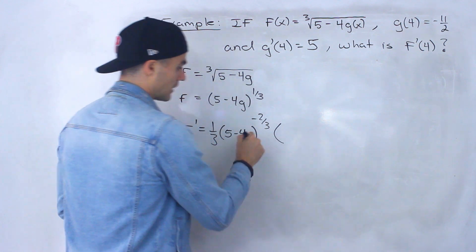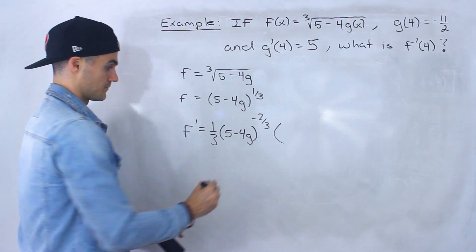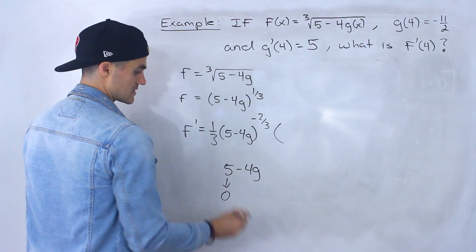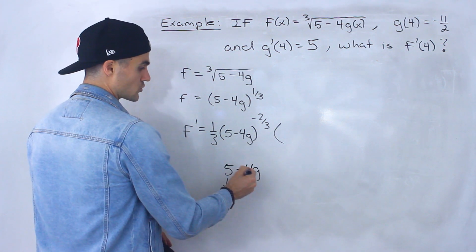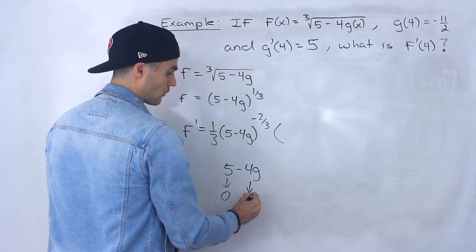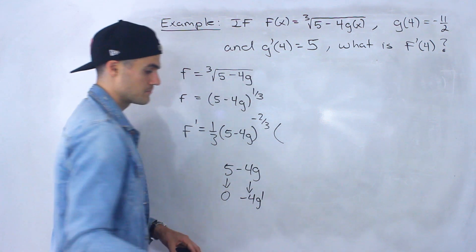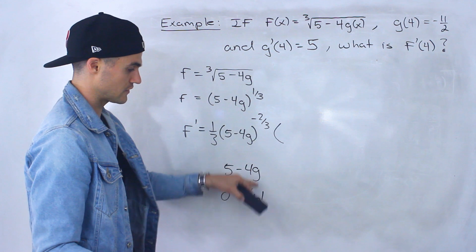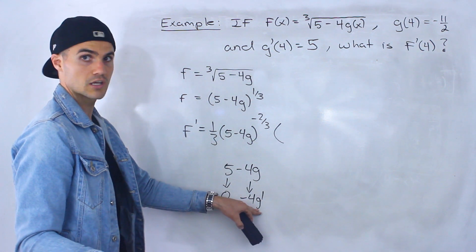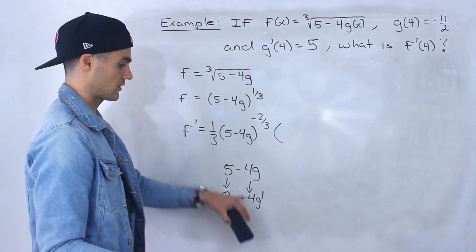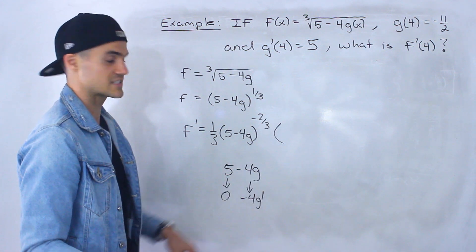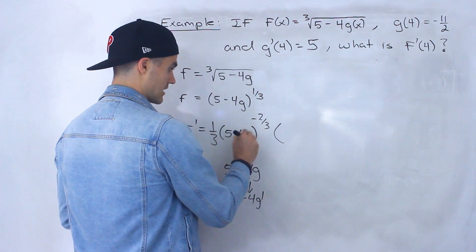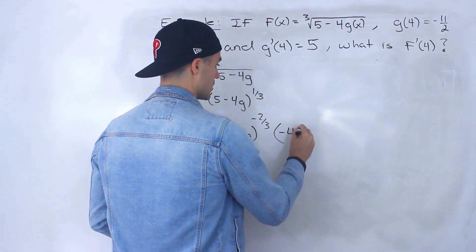Then we multiply by the derivative of the inside. For 5 minus 4g, the derivative of 5 is 0. And the derivative of negative 4g is not just negative 4 — it's going to be negative 4g prime, because the derivative of g, since it's a function, is g prime. That constant stays in front because it's attached to the g. So the derivative of the inside function ends up being negative 4g prime.